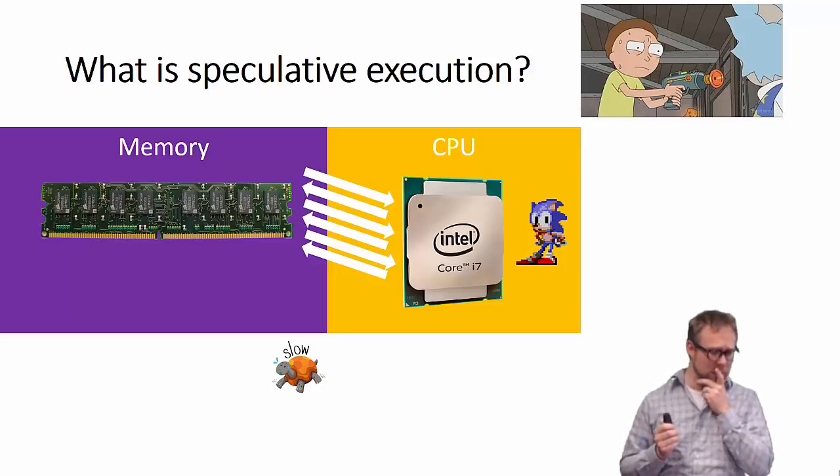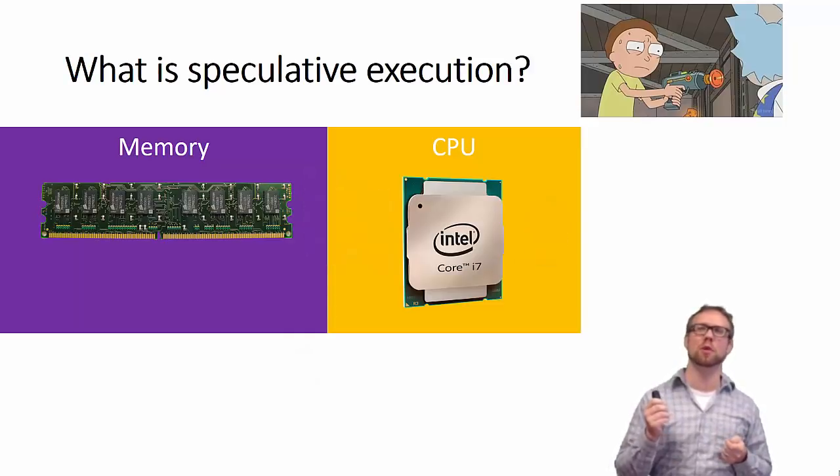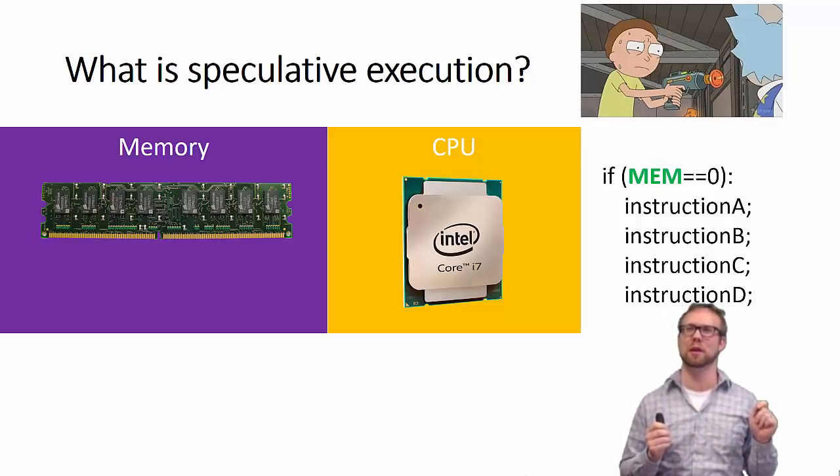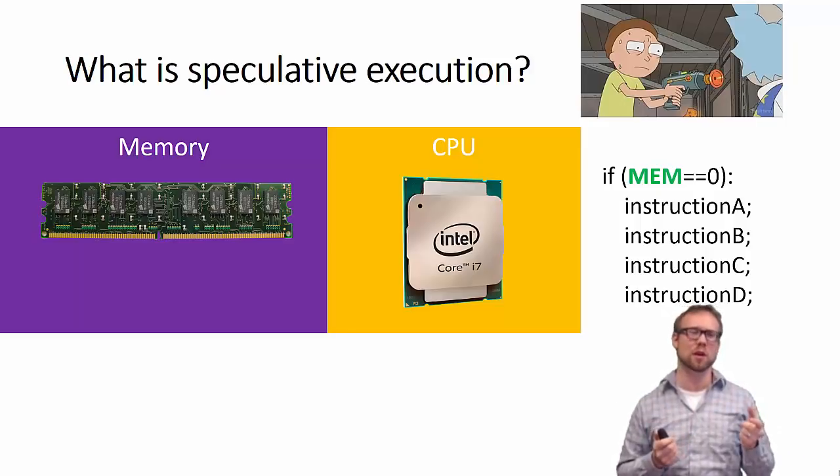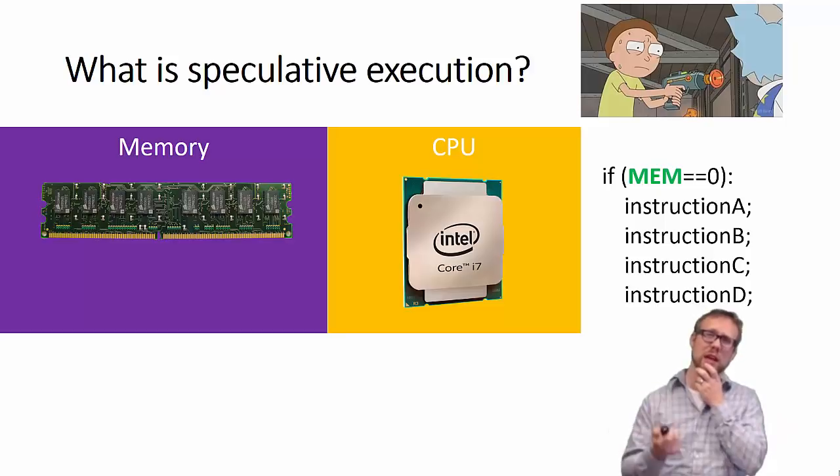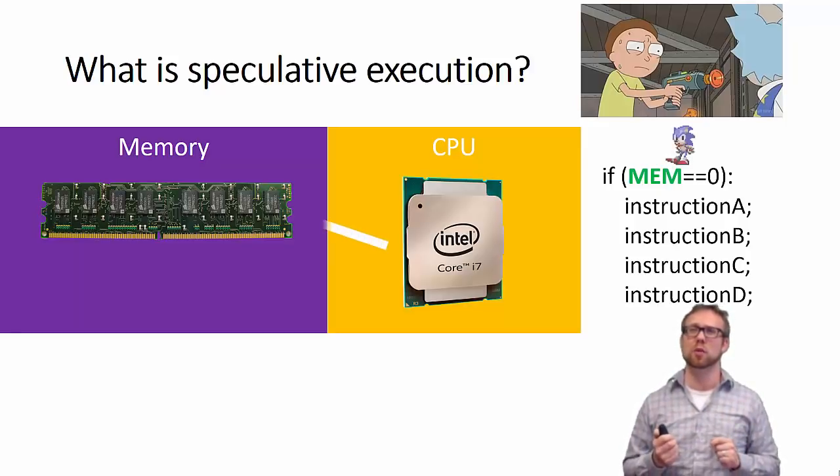So, 20 years ago, what people came up with was, well, what about if we just make our CPUs do speculative execution? What we mean by that is that, suppose your program looks something like this. There's a branch, there's an if sentence that depends on memory in some way. And there's really only two options. Either whatever you're going to get from memory is going to be zero in this case, or it's not. So, what if you just guess? You think that maybe the most likely thing to happen in this case is that you're going to get a zero from memory.